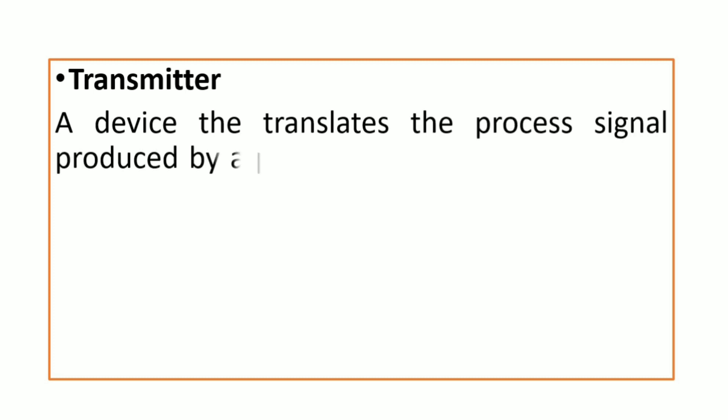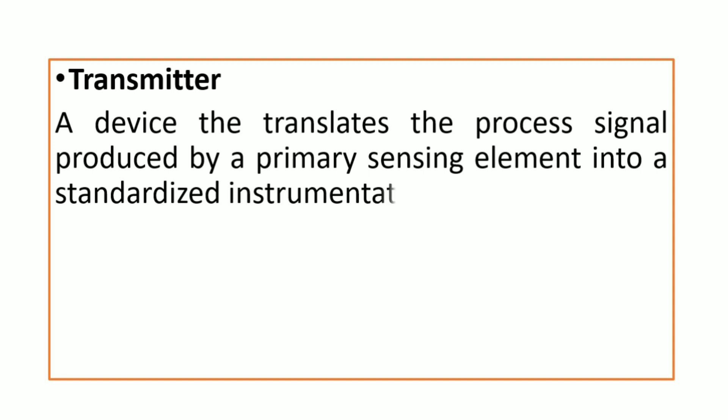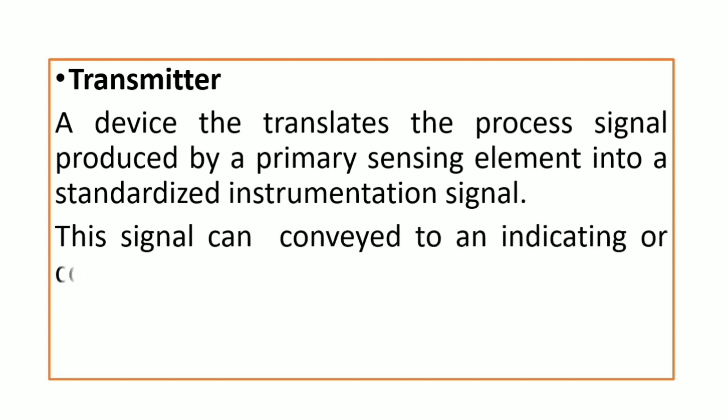Transmitter. Transmitter is a device that translates the process signal produced by a primary sensing element into a standardized instrumentation signal. This signal further can be conveyed to an indicating or controlling device.